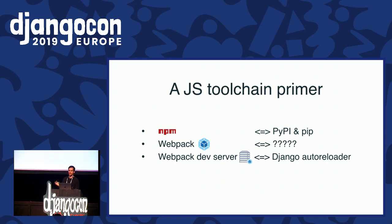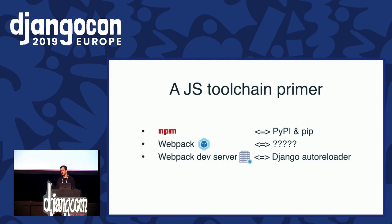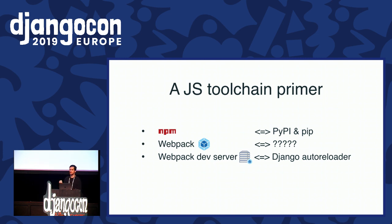A quick catch-up on the JS toolchain — I'm not sure everyone knows about this. Very quickly: npm is the main JavaScript package repository. It's actually both the repository and the client for the repository, so it's equivalent to both PyPI and pip. Webpack is the main build tool for modern JS applications — it's what produces the bundle, the JavaScript source code that ends up being shipped to the browser. There's no direct equivalent for this in Python because we can just run the Python code. And webpack dev server is a wrapper on webpack that, much like the Django hot reloader, looks for changes in the source code, recompiles, and serves those files.